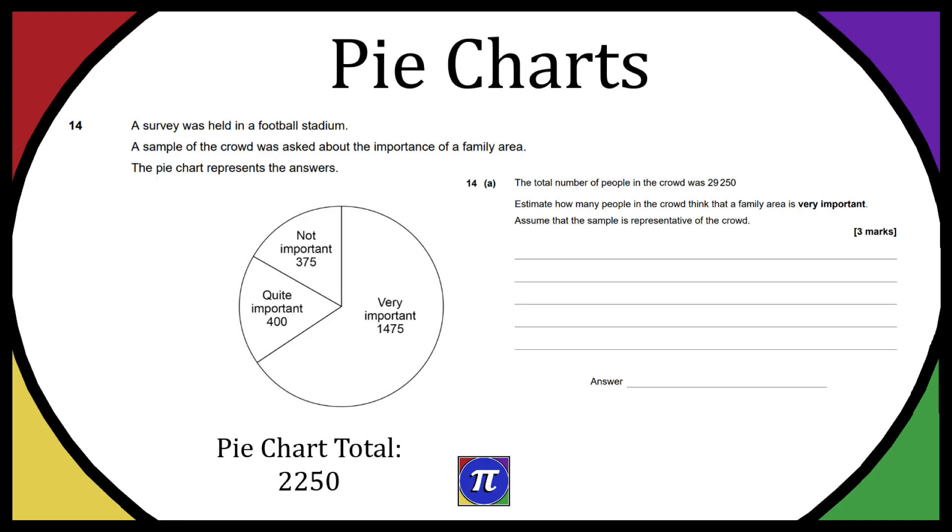So we need to make an estimate of everyone in the crowd in the stadium, which is 29,250, but we only have data for 2,250 people in the pie chart. They're basically asking us to extrapolate or make an assumption based on this data. We're going to assume that the proportions are all going to be the same even if we expand this to a greater amount of people.